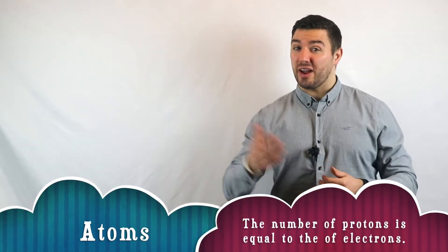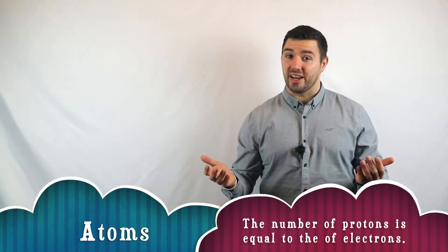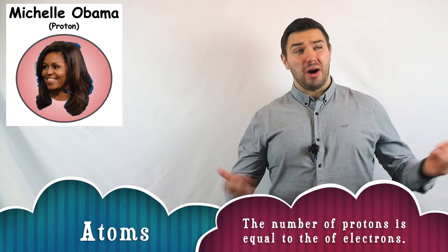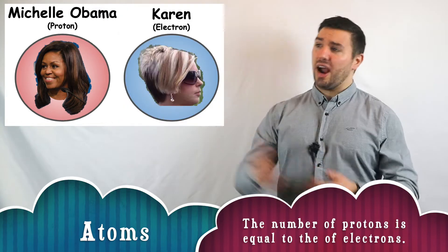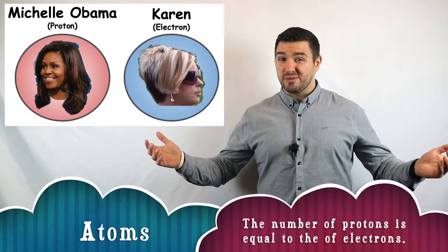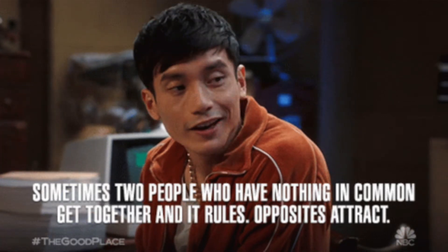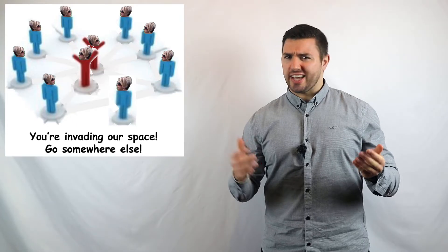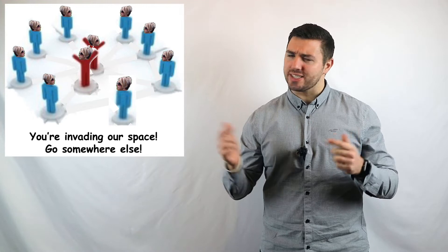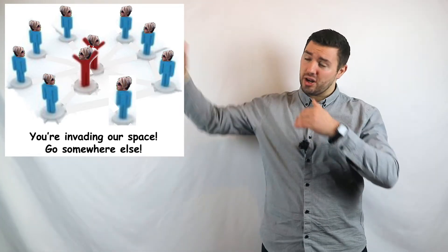Now, the thing about atoms is for every positive we have, we also have a negative. It's a bit like real life. For every positive person there is in the world, there's a Karen asking for the manager. It just seems to balance out. Now, just like in real life, negative people seem to be attracted towards positive people. The weird thing, though, is Karens always seem to repel other Karens. They tend to push each other away. But the fact that Karens repel other Karens keeps them all at a distance.